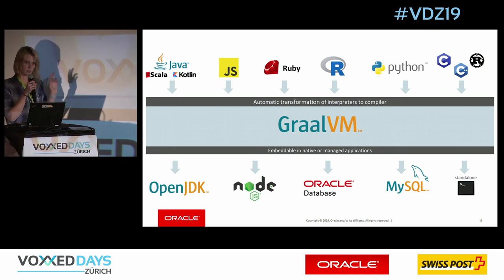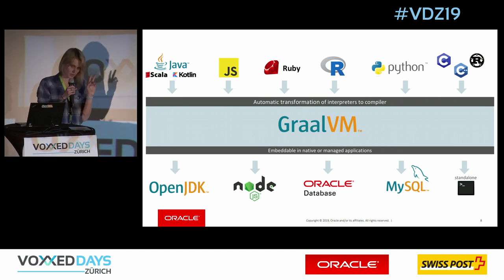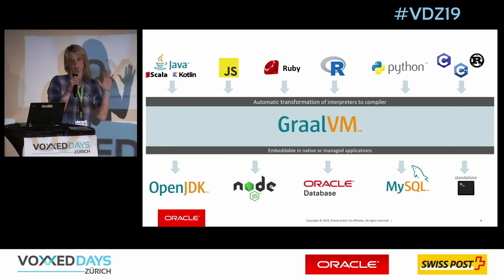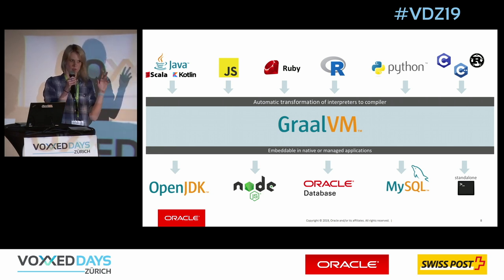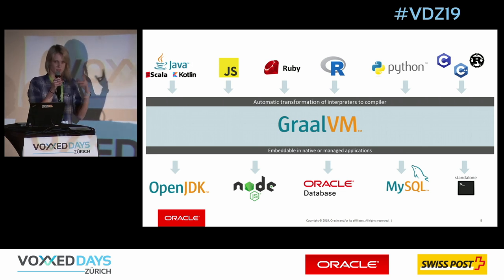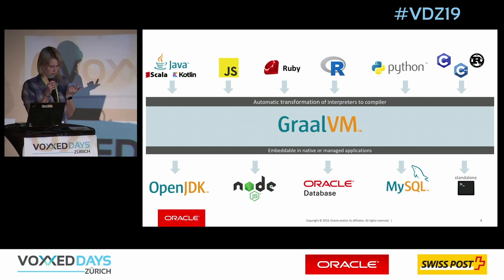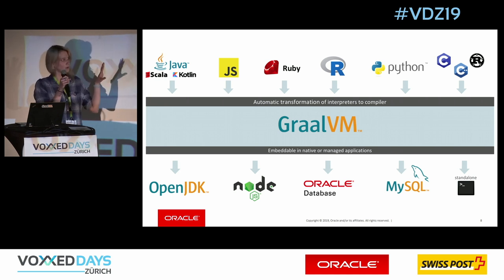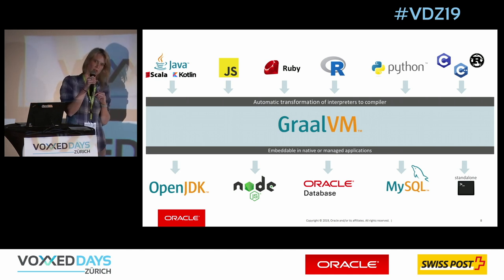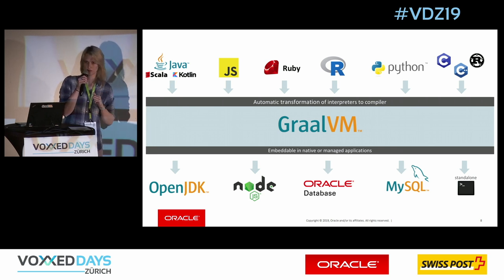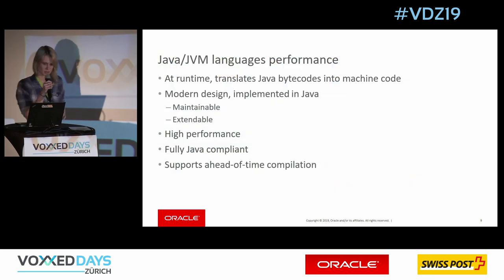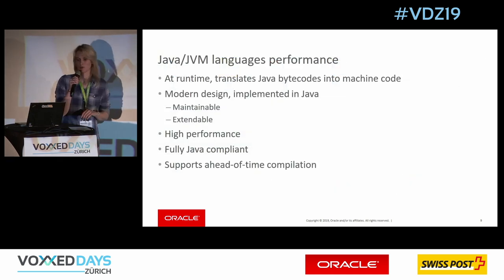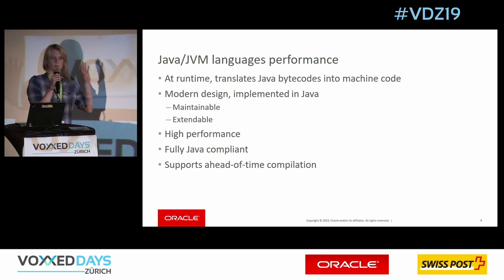GraalVM removes the isolation between programming languages and introduces interoperability between them. You can use GraalVM standalone, or in the context of MySQL, Node.js, OpenJDK, or as we just saw, inside the Oracle Database. I want to talk at a high level about three things you can do with GraalVM: performance for JVM-based applications, native image generation, and polyglot application support.